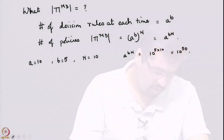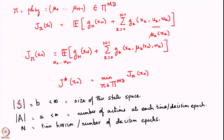You can see that even a simple problem with just 10 actions, 5 possible states, and 10 time steps has a humongous number of Markov deterministic policies to choose from. This problem is asking us to find the best policy out of this set of 10 raised to 50 different policies. This is clearly a very very complex problem - if approached in the most naive possible way by listing all possible policies, it would take longer than the age of the universe to solve.